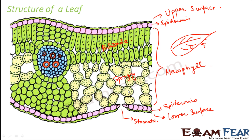Now where exactly is chlorophyll located? Chlorophyll is also present in the mesophyll layer. So here you know where exactly in a leaf you have the stomata — it is on the outer surface — and where you have the chlorophyll — in the mesophyll layer, that is in the middle layer.